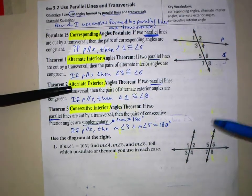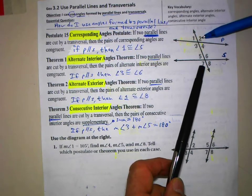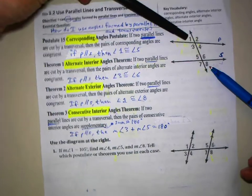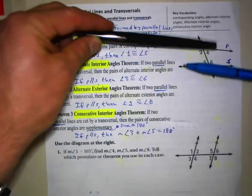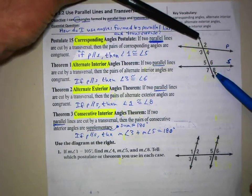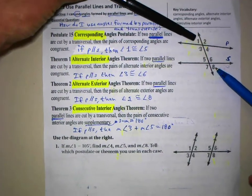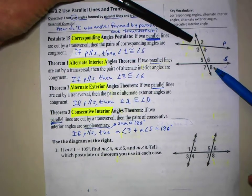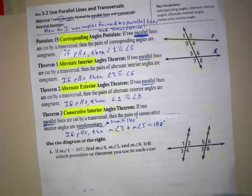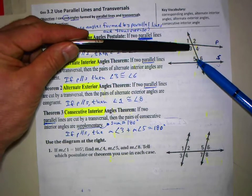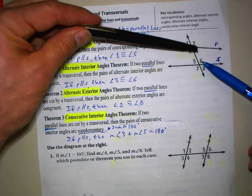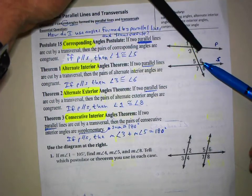Alternate Exterior Angles: those would be like angles 2 and 7, and angles 1 and 8 — those are alternate exterior. If lines P and S are parallel, then these alternate exterior angles are going to be congruent. The last one: Consecutive Interior Angles would be like angles 3 and 5, and angles 4 and 6. Those are consecutive interior angles.